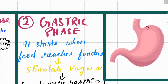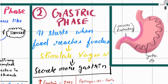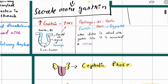In your stomach you have gastric pits which contain gastric glands that secrete gastric juices. Your stomach also has a mucosal layer which secretes mucosa that protects the stomach lining from its acidic pH.